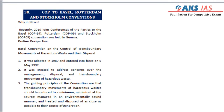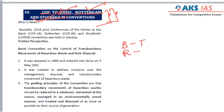Our next topic is the Conference of Parties to the Basel Convention, Rotterdam Convention, and Stockholm Convention. These three conventions are very important for prelims. All three deal with some kind of hazardous material. The Basel Convention deals with the transboundary movement of hazardous waste. The Rotterdam Convention deals with prior informed consent with respect to harmful chemicals in international trade. The Stockholm Convention deals with persistent organic pollutants.